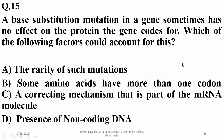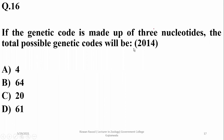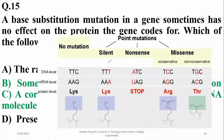A base substitution mutation in a gene sometimes has no effect on the protein the gene codes for. This can occur because some amino acids have more than one codon — such mutations are known as silent mutations, which do not cause a change in the amino acid but change the nucleotide sequence. So beta is the right option. For example, a lysine DNA sequence could result in a triple adenine RNA that still codes for lysine — it's a silent mutation that causes no change in amino acids.